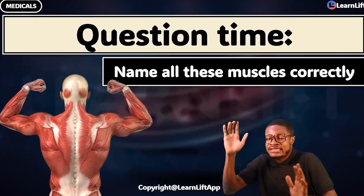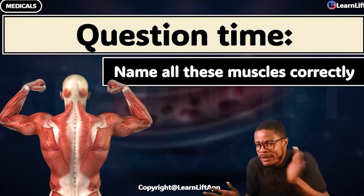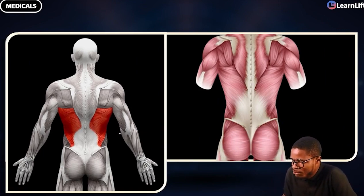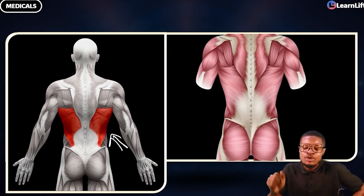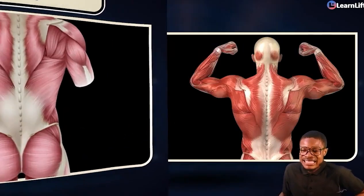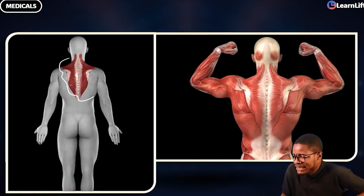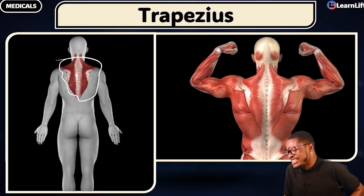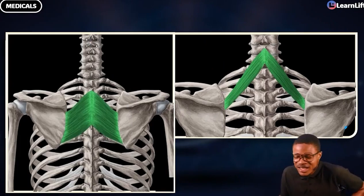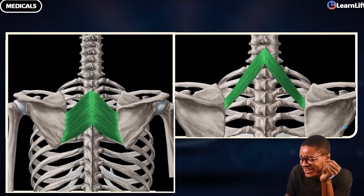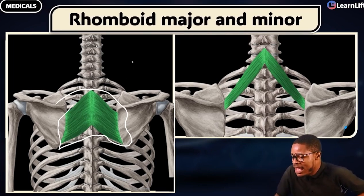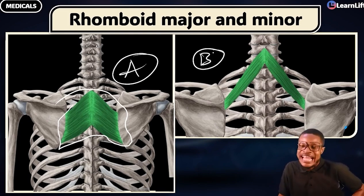Lower back is the answer for latissimus dorsi. Upper back is trapezius. Now, identify these muscles from the image. Which muscle do you have at the lower back? Latissimus dorsi — correct! Which muscle is this one at the upper back? Trapezius — correct! And these two muscles here? Your rhomboid major and your rhomboid minor.